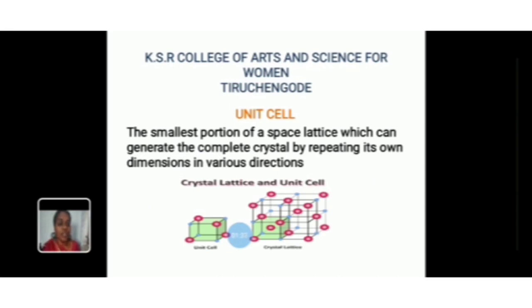Then, what is a unit cell? The atoms in a crystal are arranged in a periodic array. It is therefore possible to isolate a representative unit cell in each variety of crystal. This unit cell may be a group of ions, atoms, or molecules. The unit cell is defined as the smallest portion of a space lattice which can generate the complete crystal by repeating in various directions. The diagram shows a unit cell defined by the length of its edges and by the angles between them.